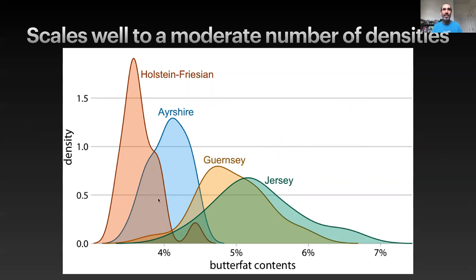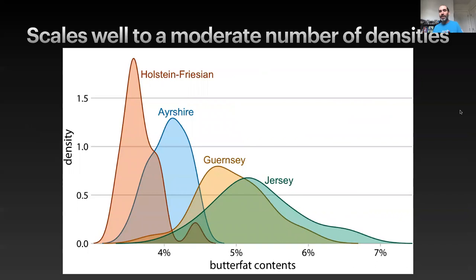Densities also tend to scale well to moderate numbers of distributions. This example is looking at distributions of butterfat content within different types of cow milk, and we're able to see four different overlapping distributions that are still fairly visually easy to tell apart. That said, you can't take this to really high dimensions, but there are some other creative ways to consider visualizing multiple distributions simultaneously.